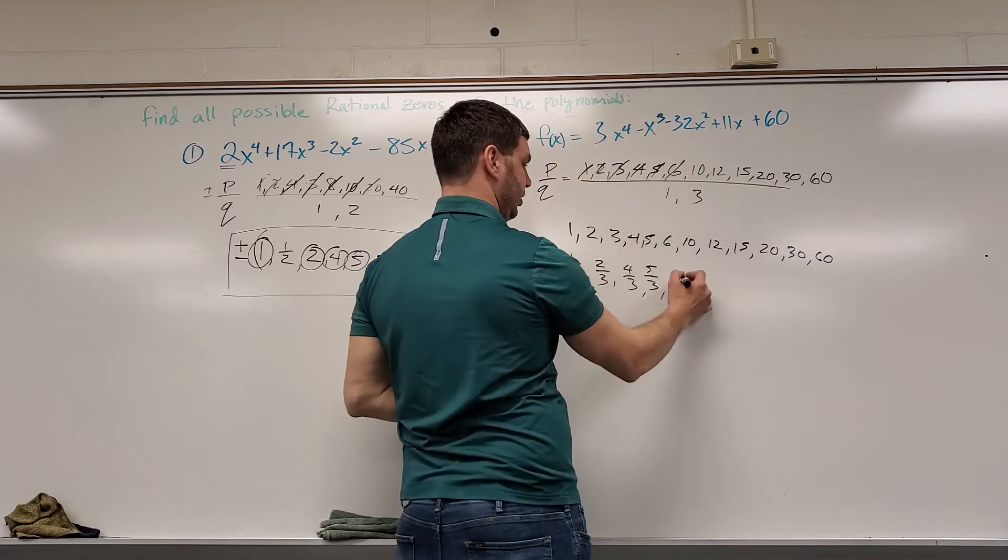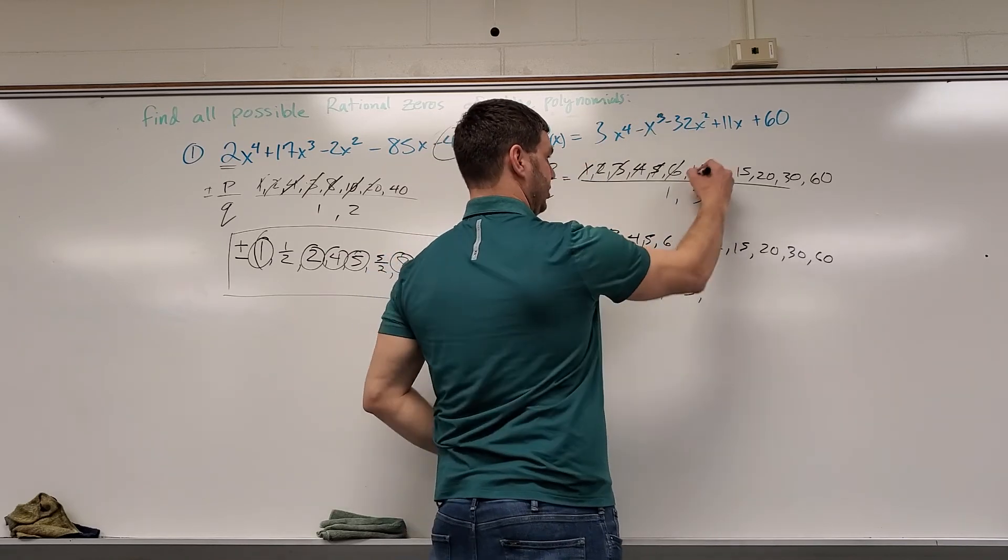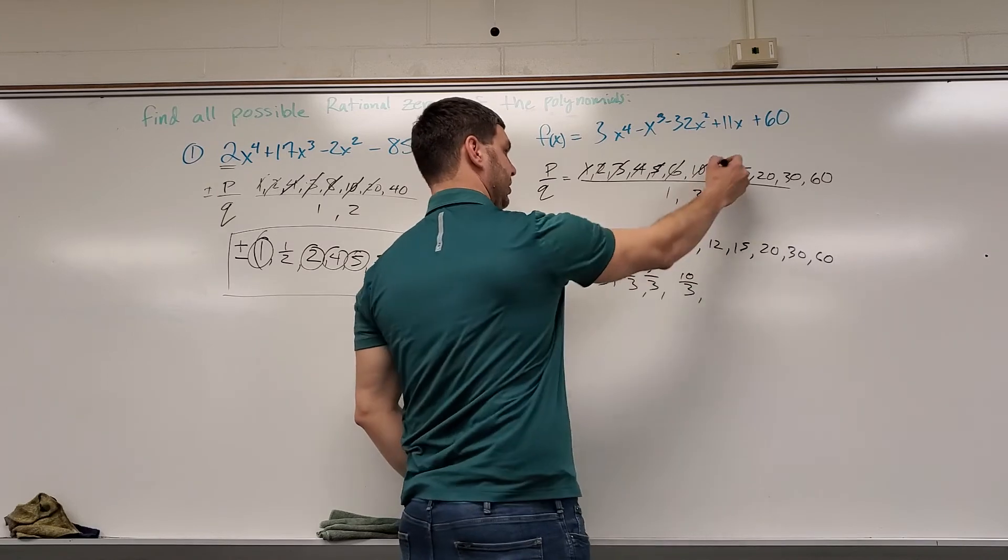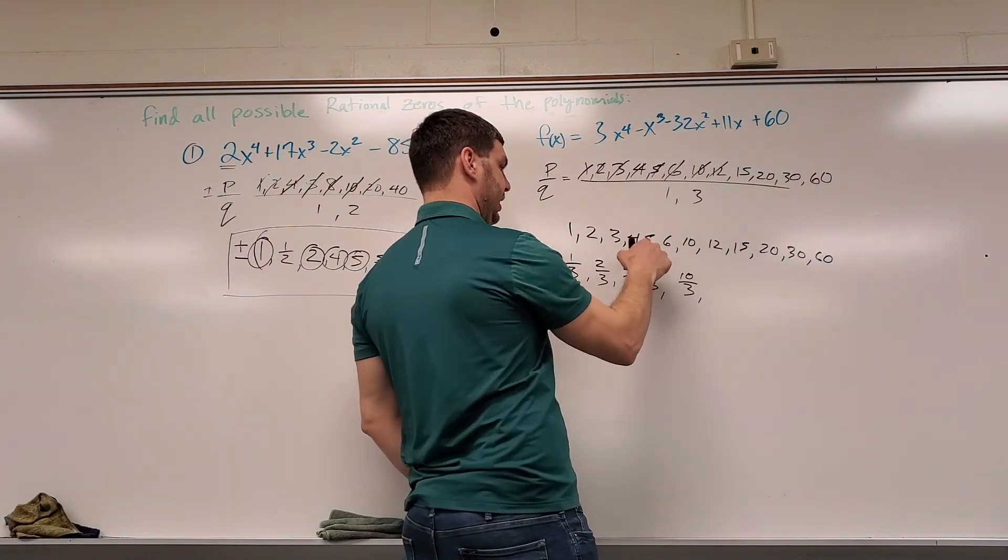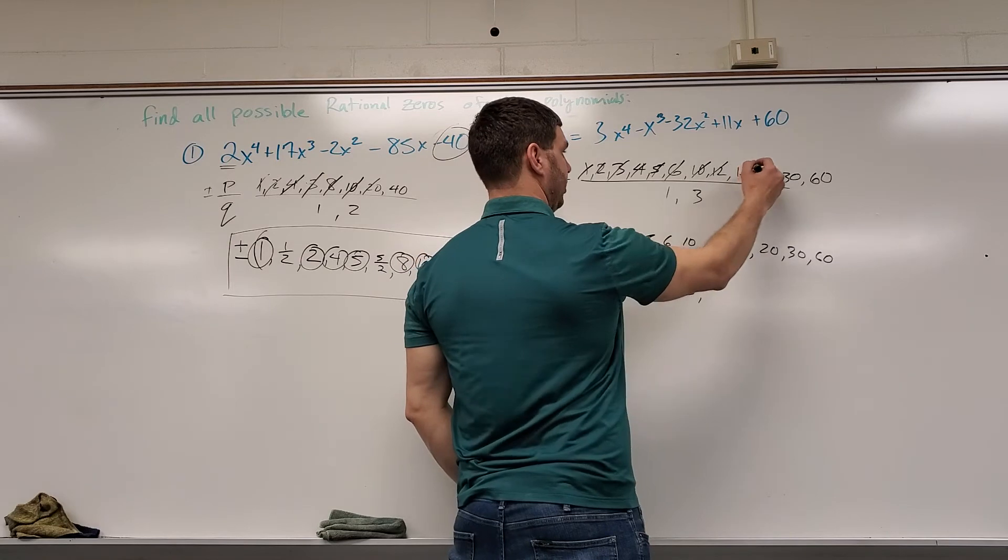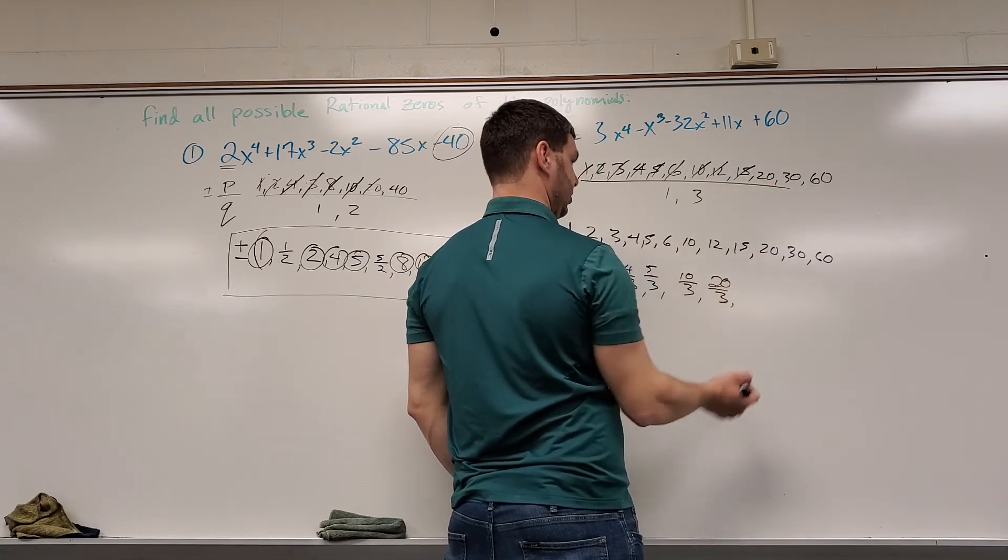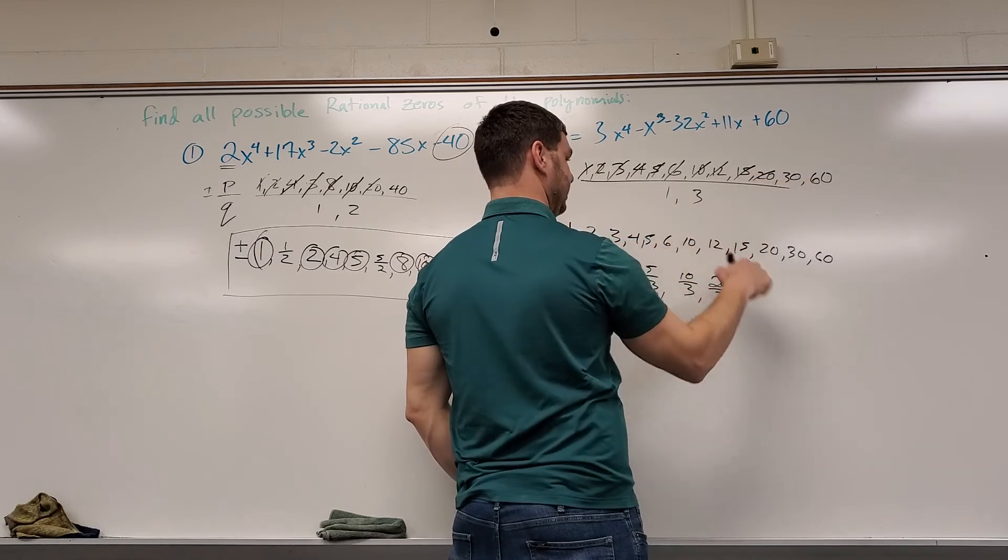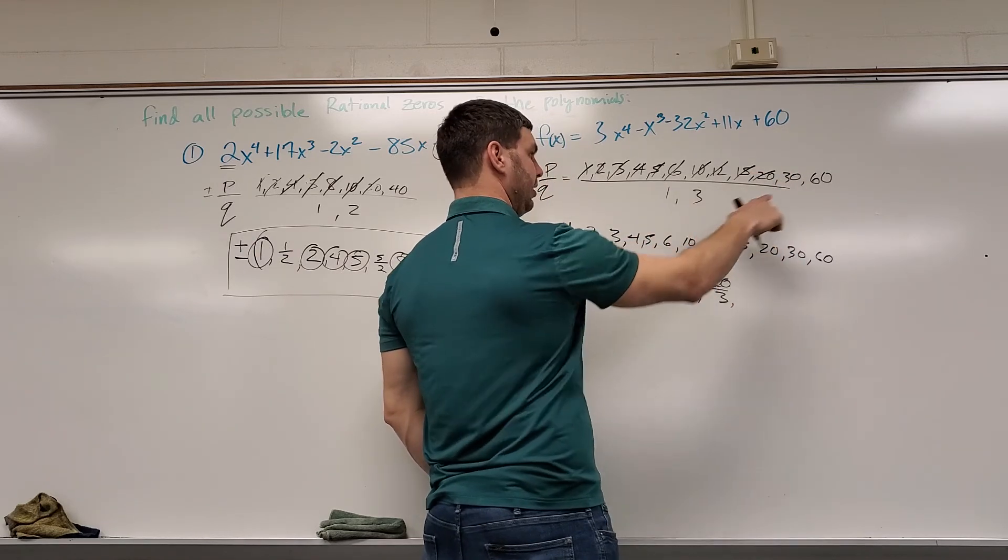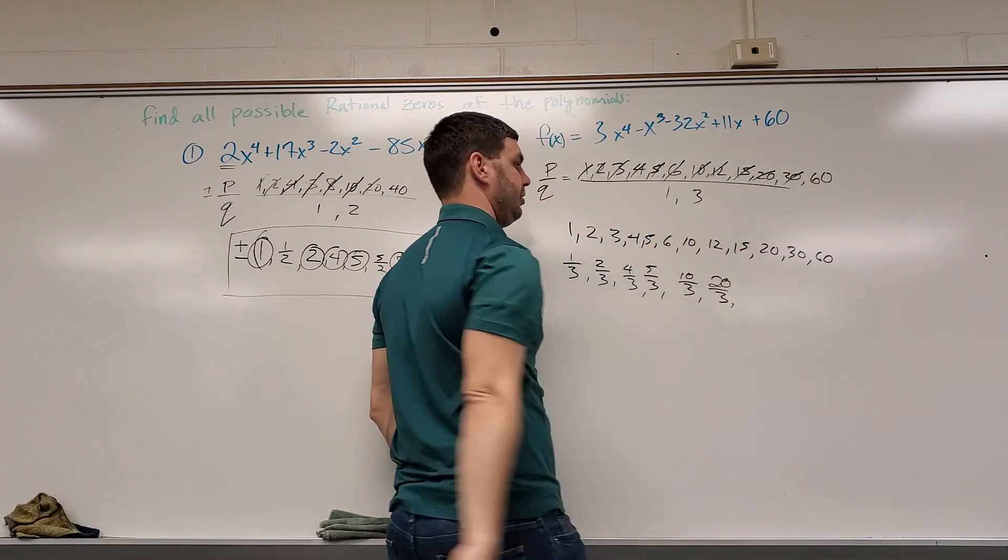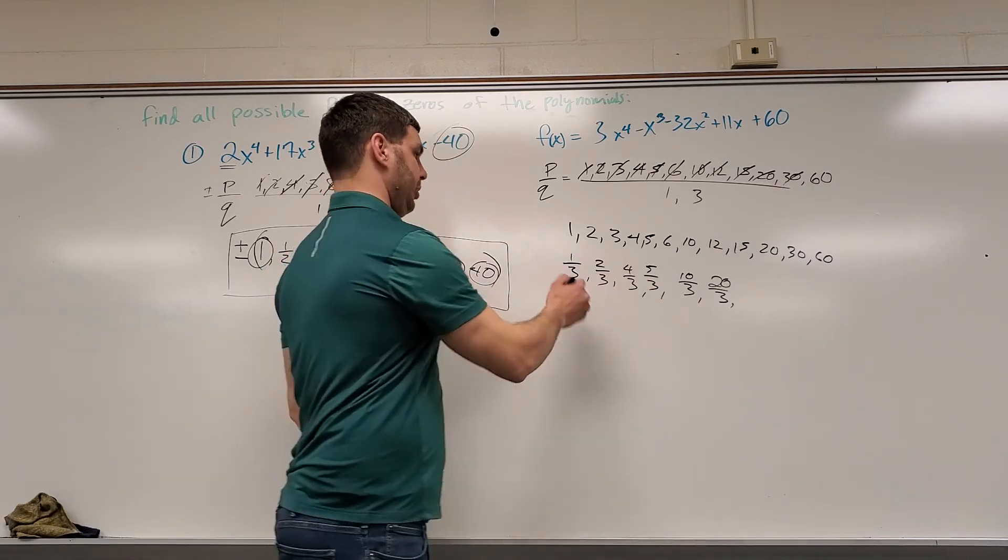10 thirds, nope. 12 over 3 is 4. That's on the list. 15 over 3 is 5. Also on the list. 20 divided by 3 is 20 thirds. 30 divided by 3 is 10. Right here. And 60 divided by 3 is 20. Also on my list. So this.